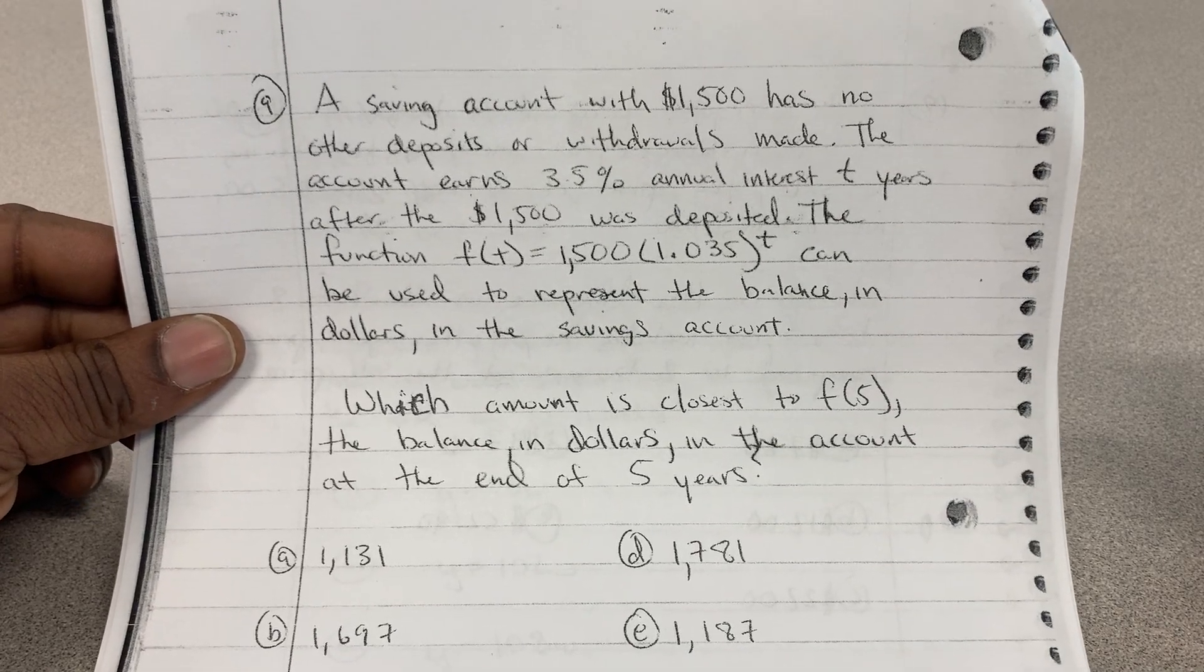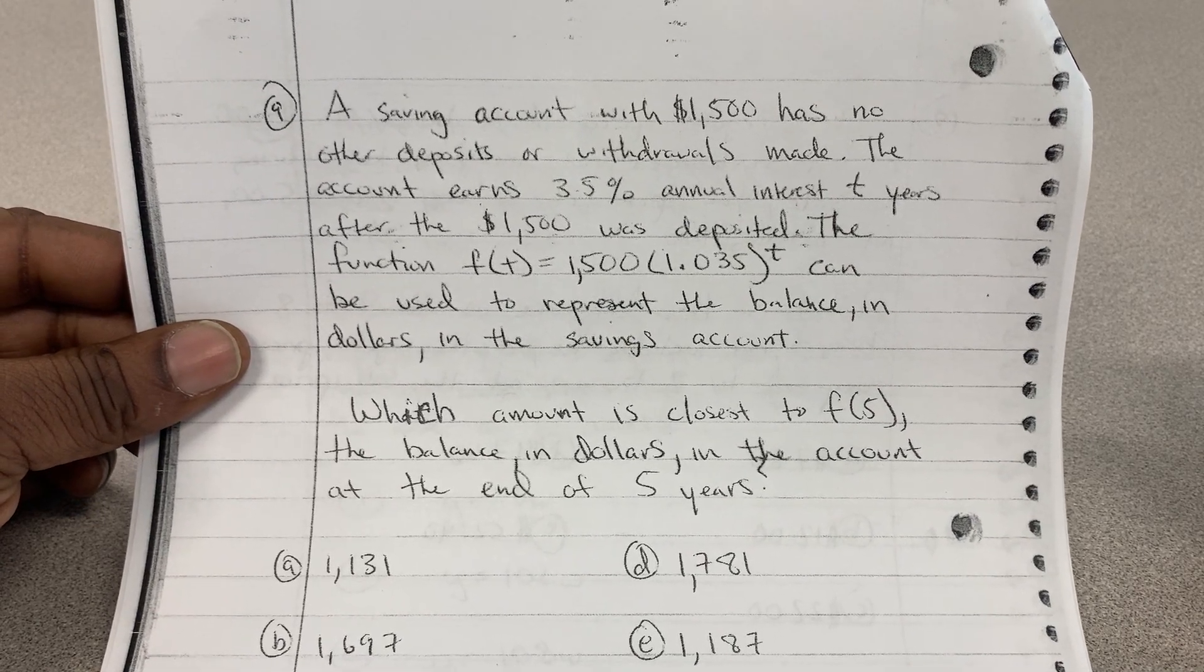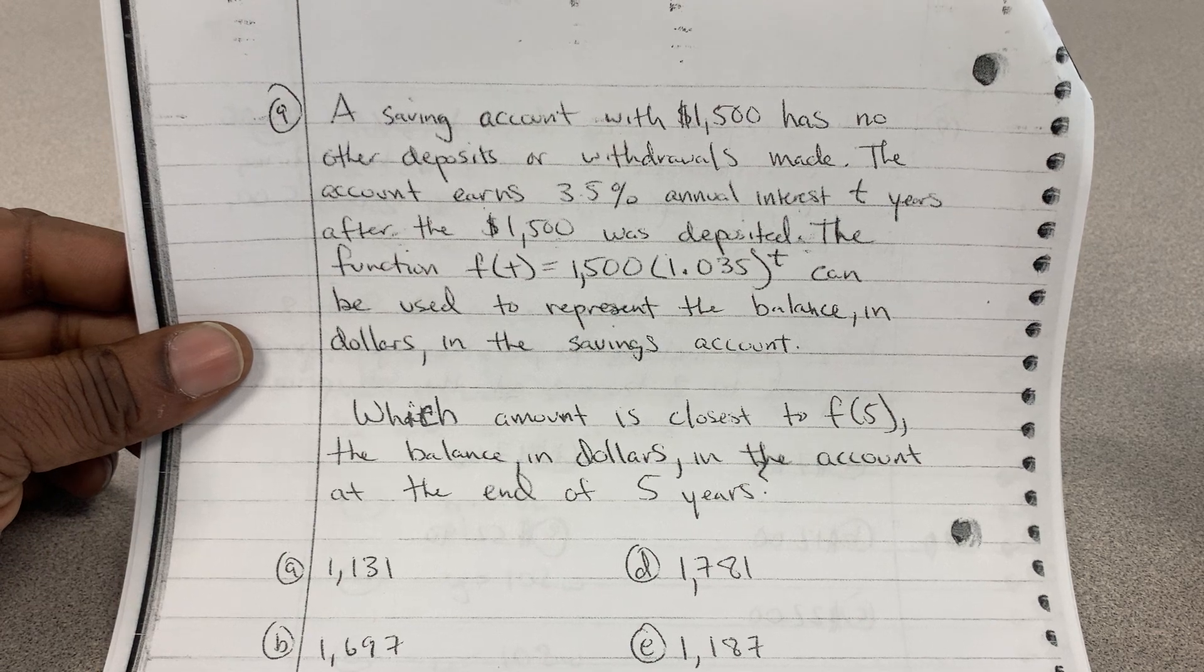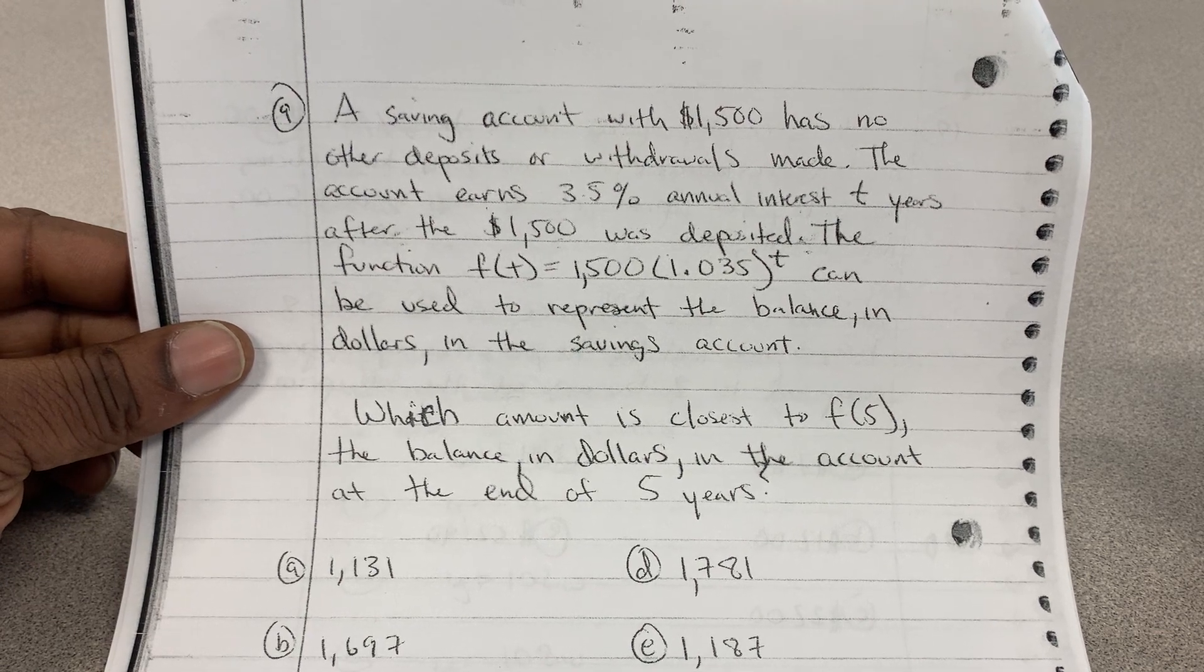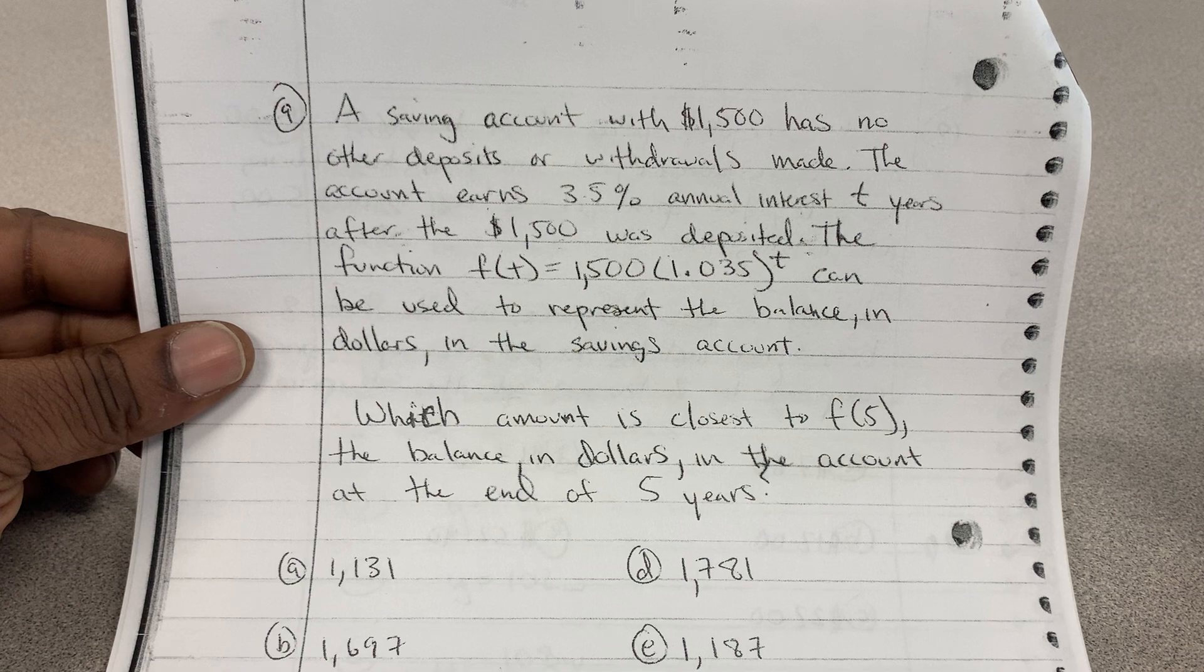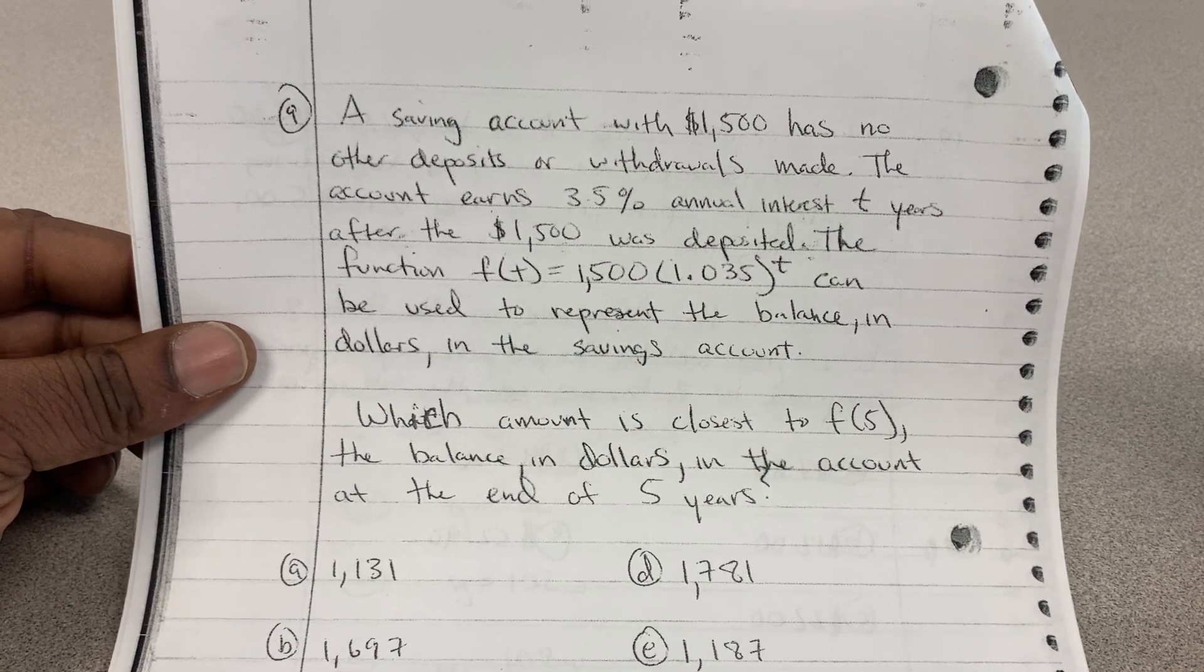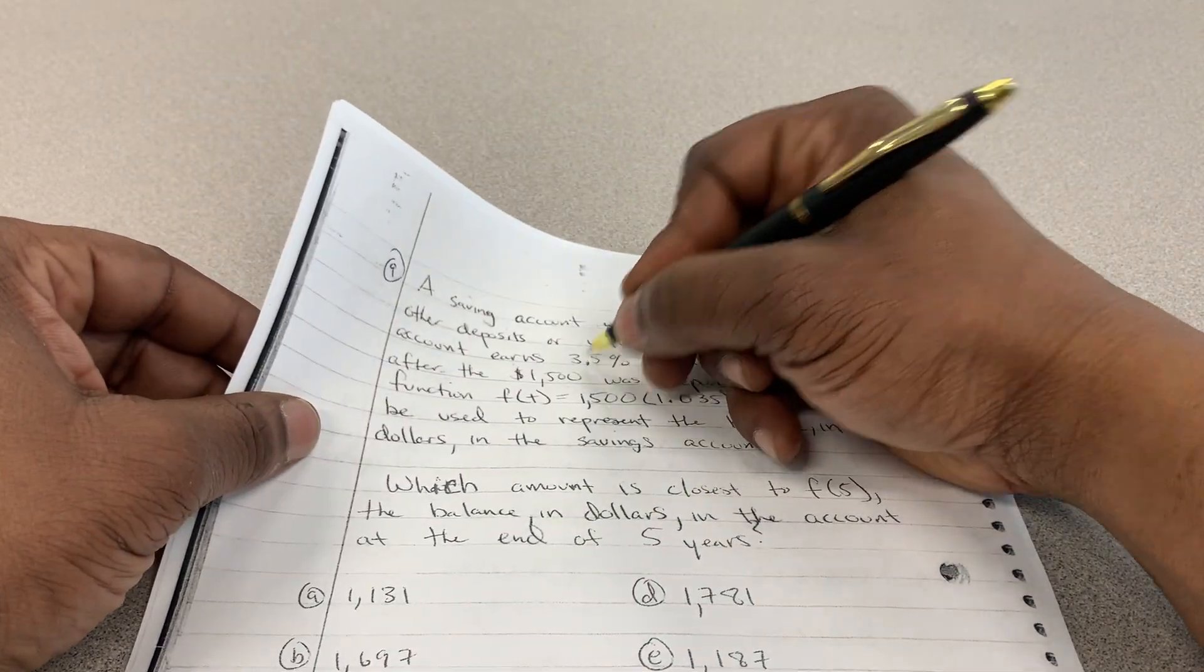Number nine, a saving account with $1,500 has no other deposits or withdrawals made. The account earns 3.5% annual interest rate.